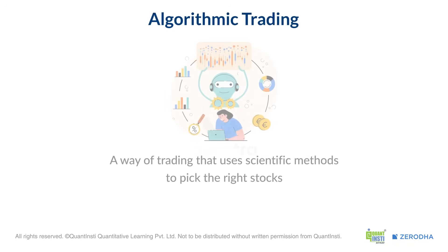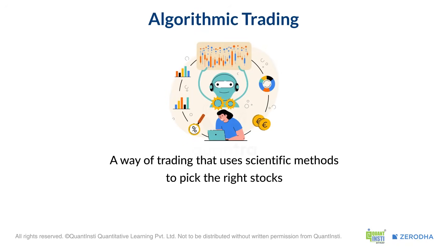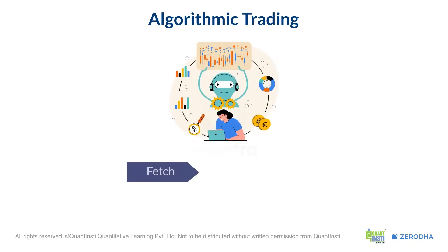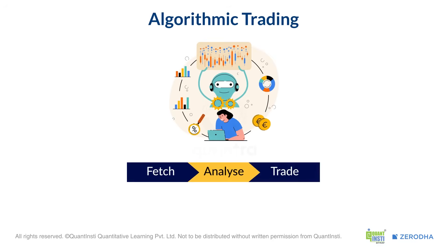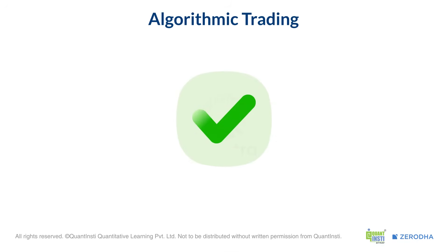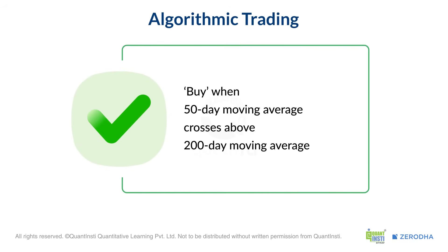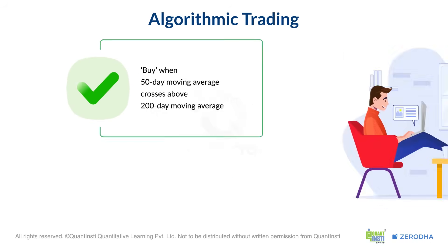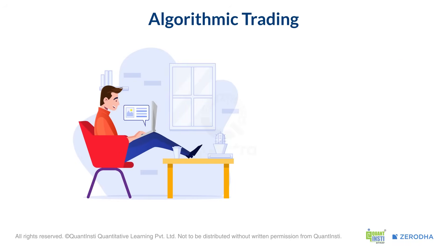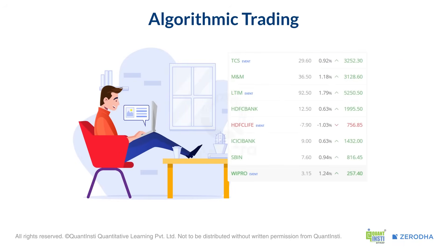Think of it like this: it's a way of trading where we use scientific methods to pick the right stocks, fetch data, analyze it, and decide when to buy or sell — all using computer programs. Let's say we create a rule: buy a stock when its 50-day moving average crosses above its 200-day moving average. Instead of manually tracking this for every stock every day, a computer program scans hundreds of stocks, checks the trading rules, and places trades when the condition is met. That's how algo trading works.